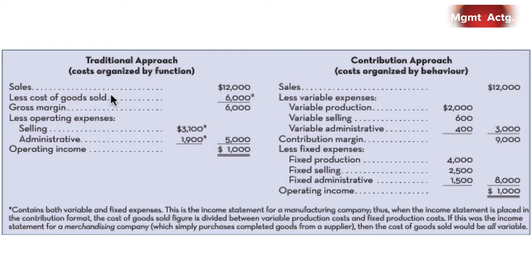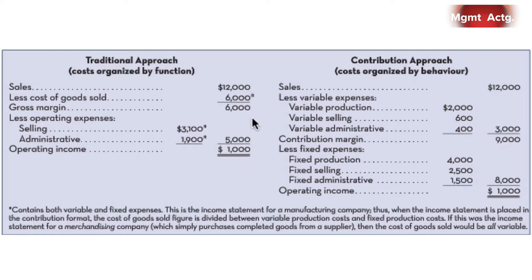Here's the traditional approach. Notice that costs are organized by function: sales, less cost of goods sold, gives us a gross margin, less our operating expenses — selling and administrative expense, sometimes shortened to SG&A, selling, general and administrative — gives us our operating income.